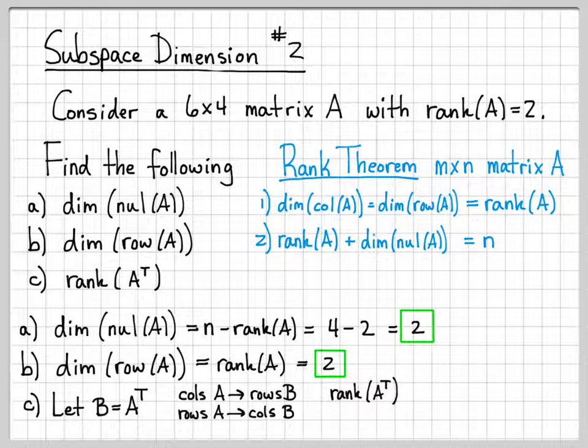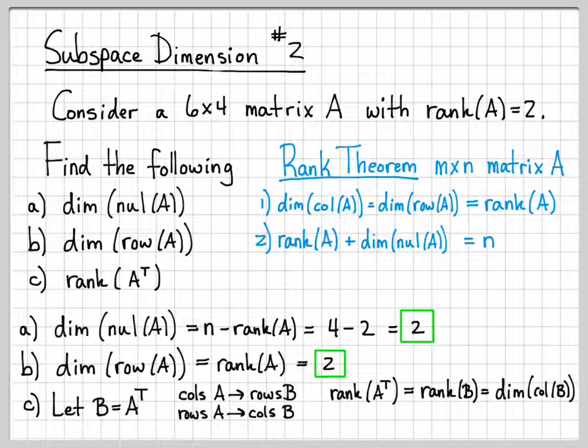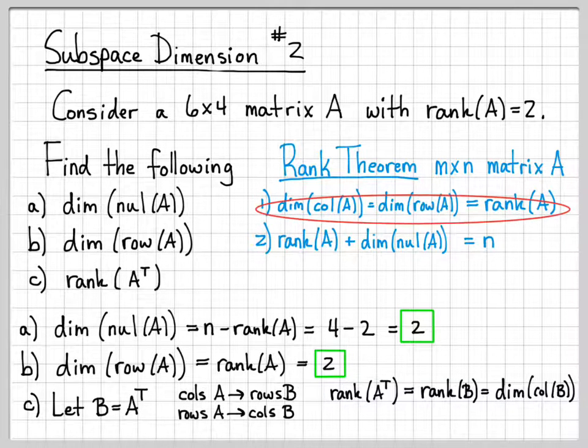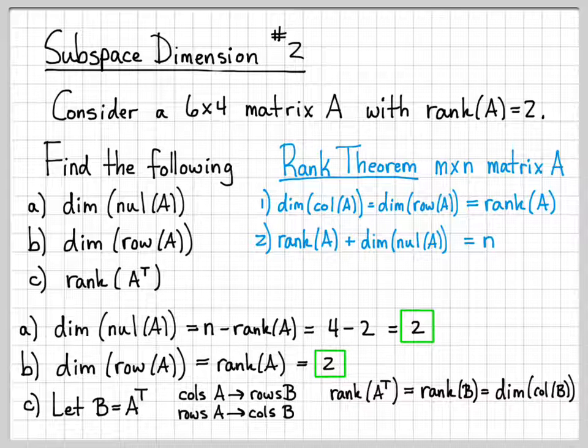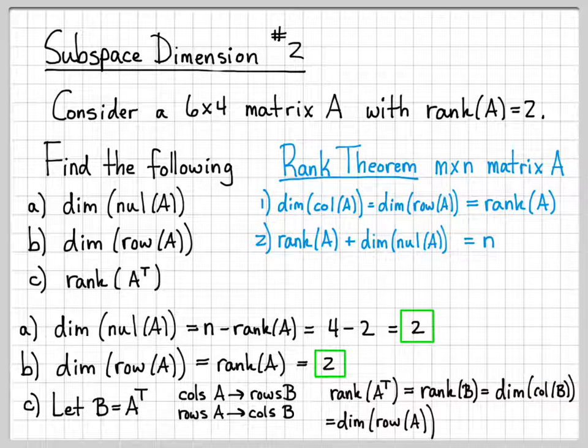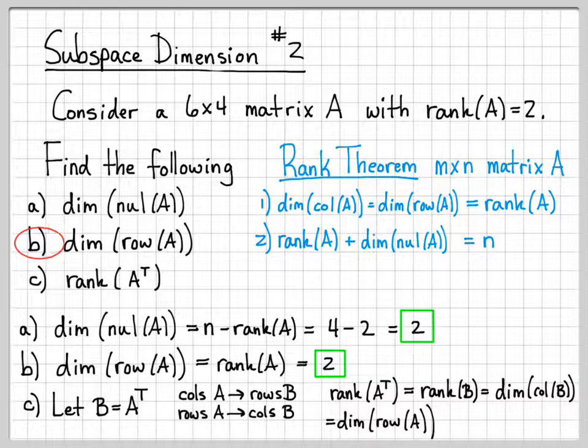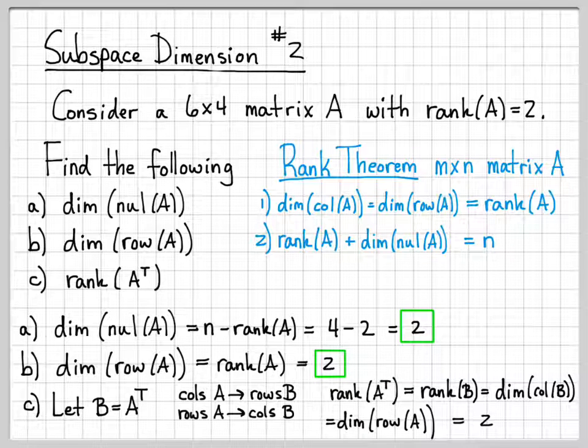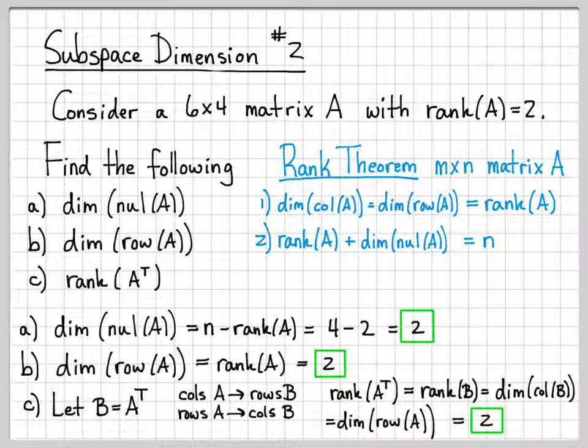So the rank of A transpose is equal to the rank of B, just by substitution right here. But this has to be equal to the dimension of the column space of B, right? That's just the definition of rank. The rank of a matrix is always equal to the dimension of its column space. But the columns of B are equivalent to the rows of A. So we can replace column space of B with row space of A. Those are the exact same spaces. And we were told what the dimension of the row space of A was in part B. We weren't told it, but we figured it out. It was equal to 2. So that must mean that the rank of A transpose has to be equal to 2.